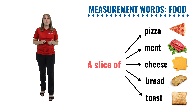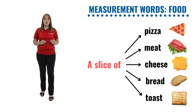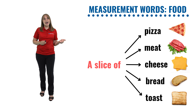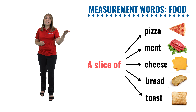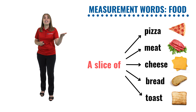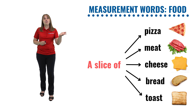We are going to start with the first measurement word: a slice of, which is used with various food items — a slice of pizza, a slice of meat, a slice of cheese, a slice of bread, a slice of toast.